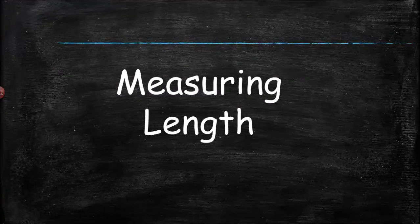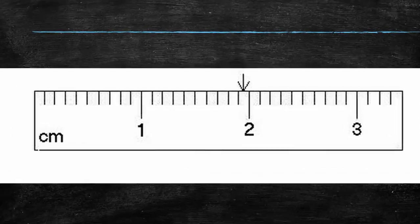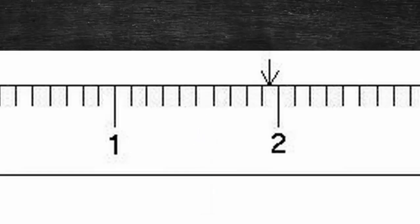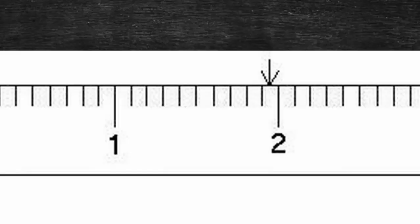How about measuring length from point A to point B? Here's a centimeter ruler — the arrow indicates where the measurement occurs. Measuring in centimeters, we know it's at least 1 cm but not 2. The smallest lines are tenths of a centimeter — millimeters. Counting the lines: it's at least 1.9 cm. Now we estimate: some may say 1.94, others 1.95 or 1.93. All are correct, as long as you estimated that final digit in the space between the lines.